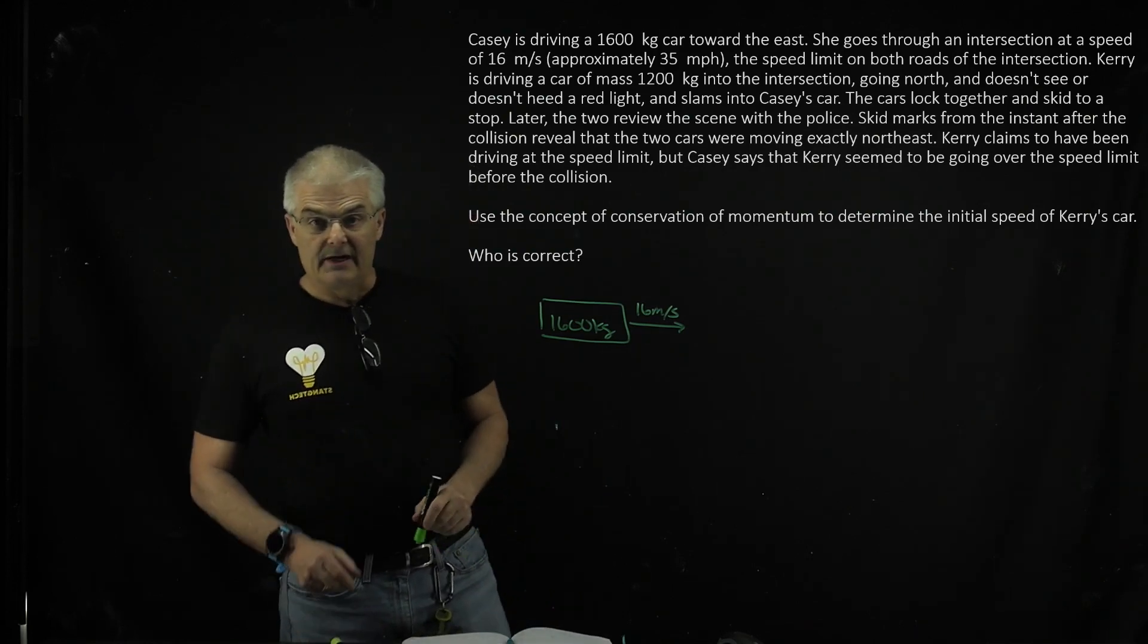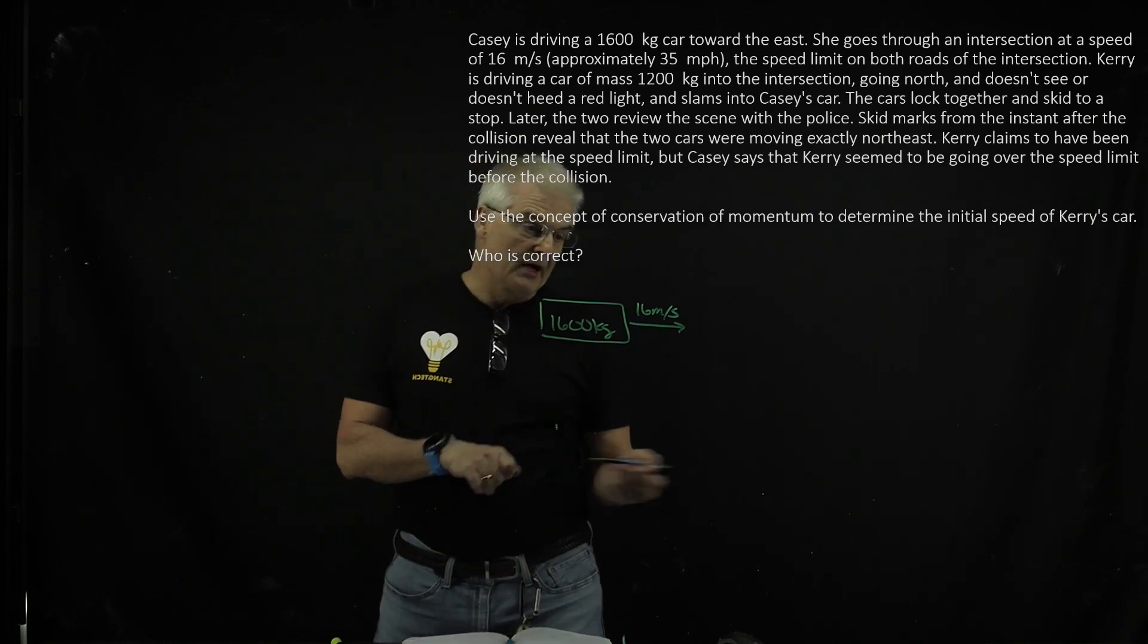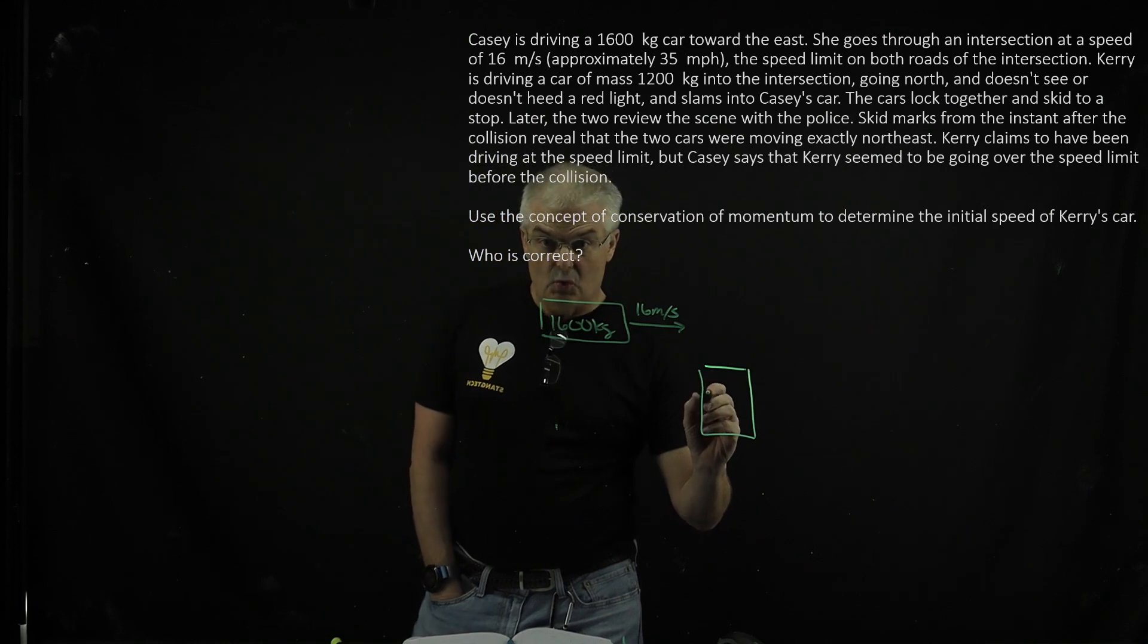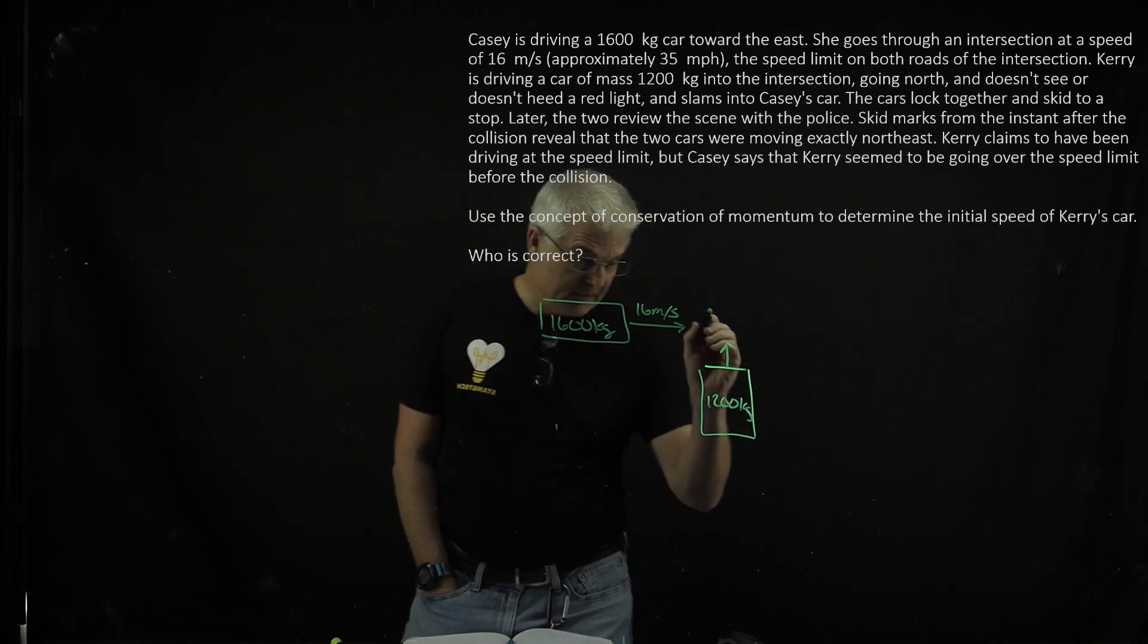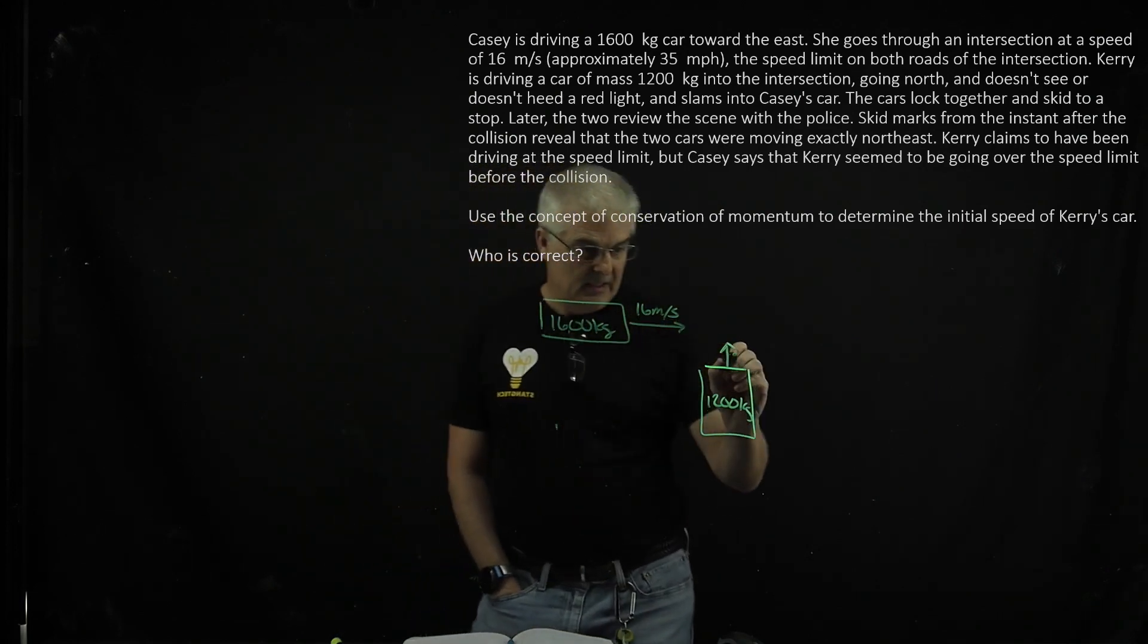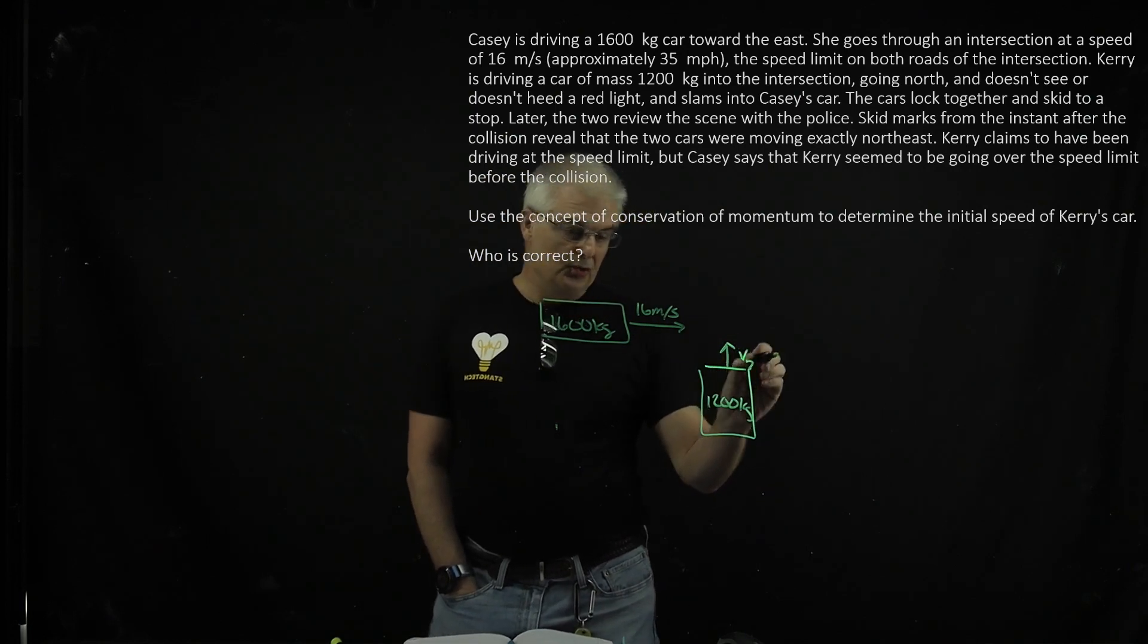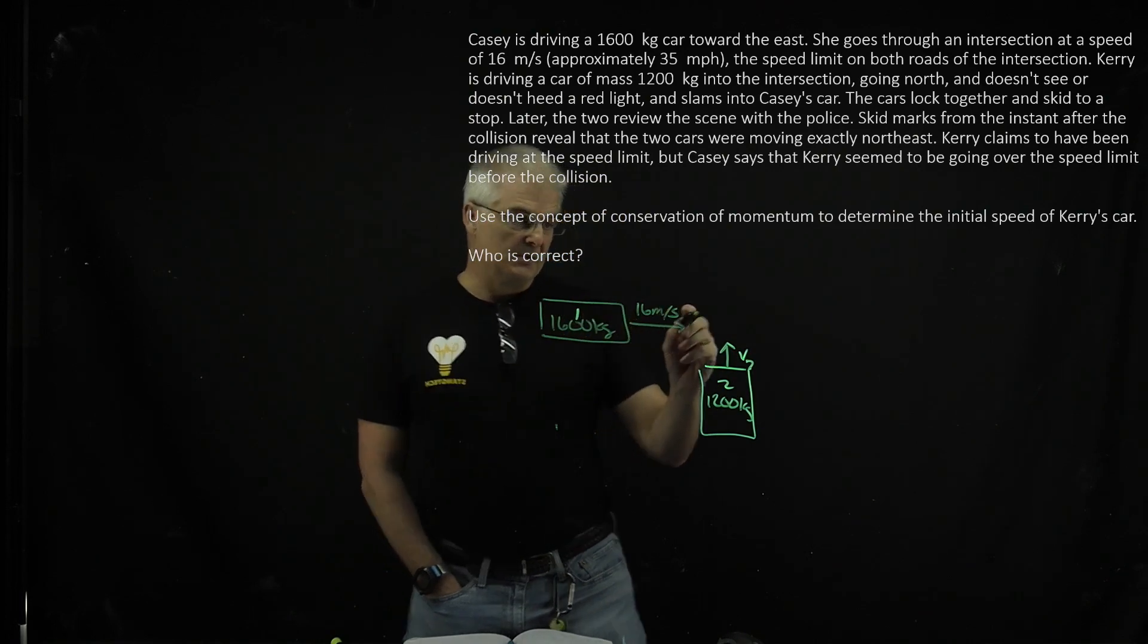And then we've got another person, I forget which person it is, not important, is driving a car that weighs 1200 kilograms and traveling at some speed. They don't give you the speed. So we're going to call this V2, or this is car one and this is car two.